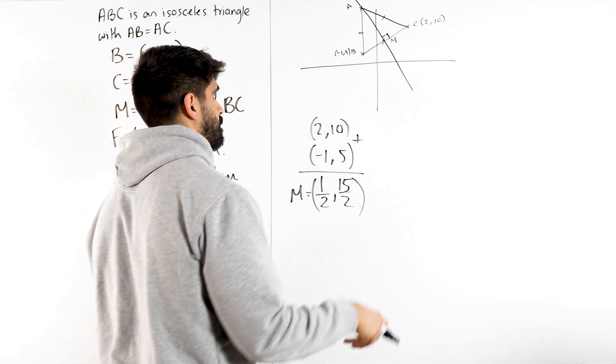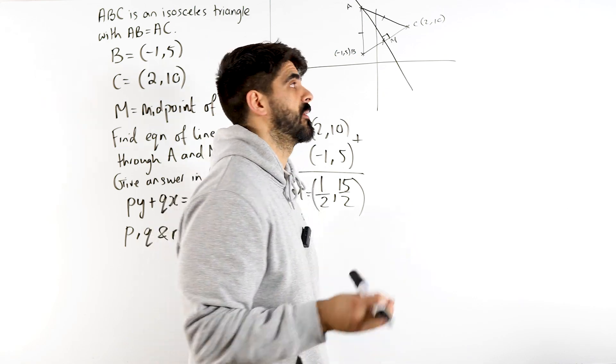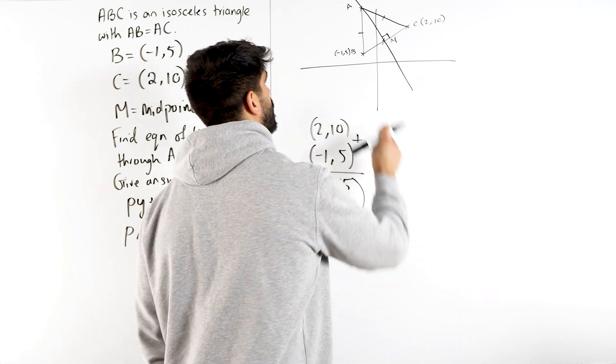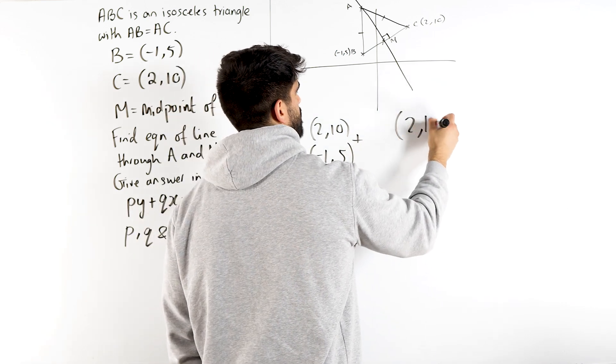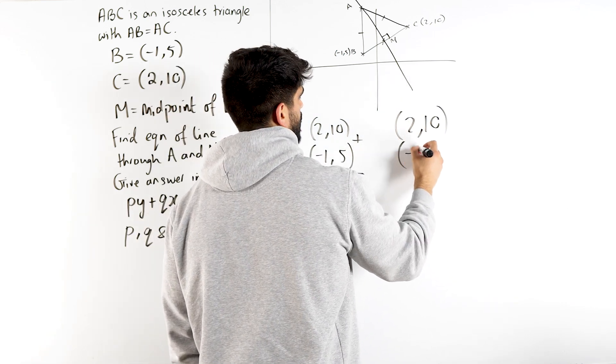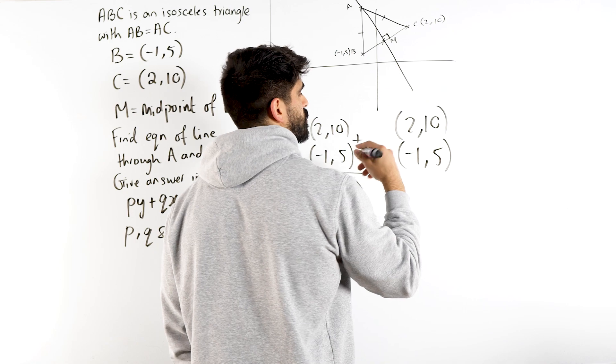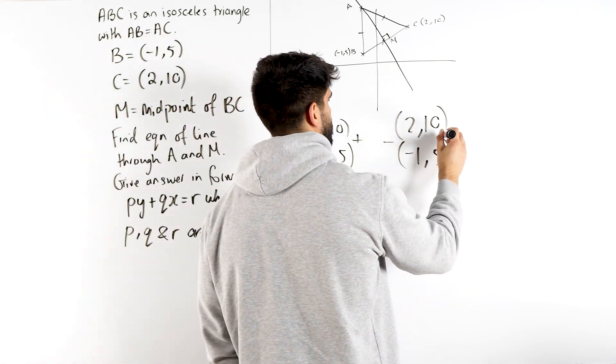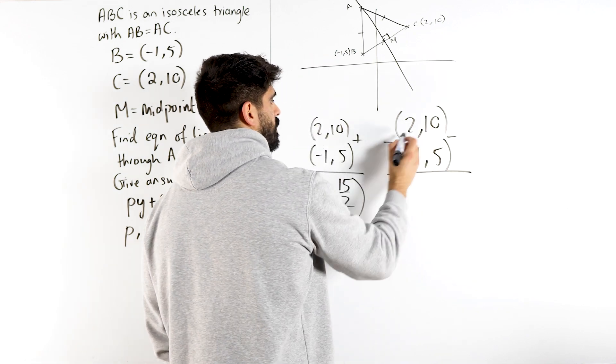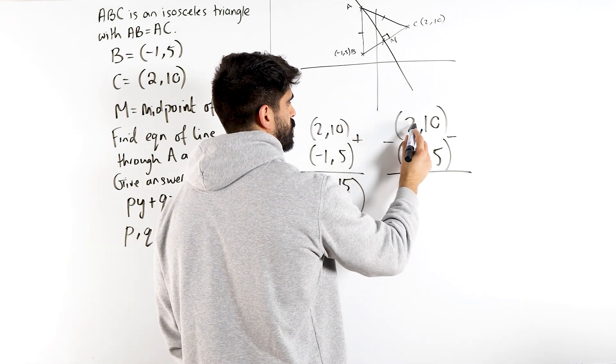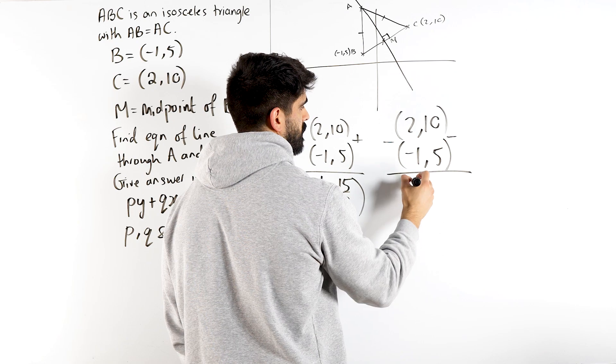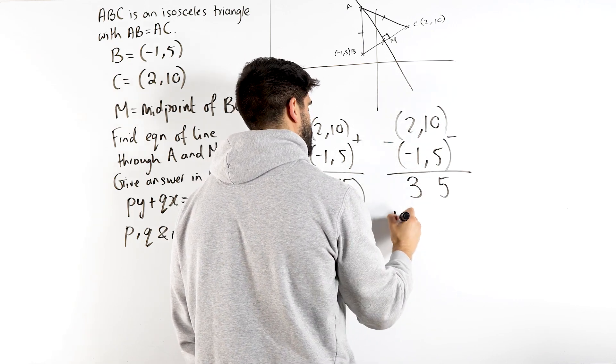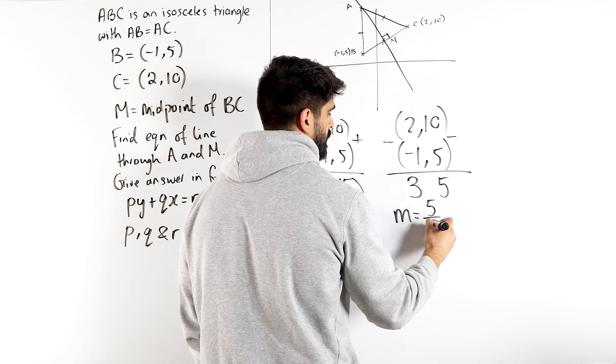Now we need the gradient. The gradient is the change of y over the change of x. Now I do not like writing y2 minus y1 because students make mistakes all the time when it involves negatives. So I'm going to give you guys a better way of doing things. Write the coordinates on top of each other. If you had to do a really long and difficult subtraction, you would use column form, right? Do the same thing here. 2 minus minus 1, that's 2 plus 1 is 3. 10 minus 5 is 5. So the gradient is the change of y, 5, divided by 3.